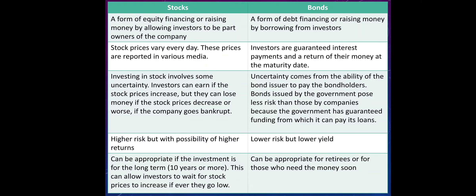What are some differences between stocks and bonds? First, stocks are a form of equity financing — raising money by allowing investors to become a part owner of the company. On the other hand, bonds are a form of debt financing — raising money by borrowing from investors; however, if they are issued bonds, they are not given the chance to become a part of the company. For stocks, their prices may vary every day, even every second, and these prices are reported in various media like newspapers and the internet.